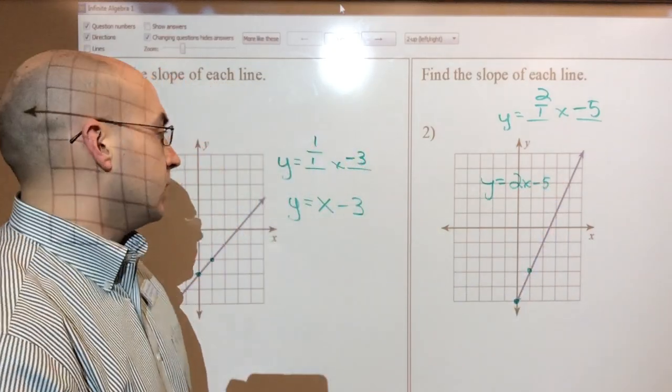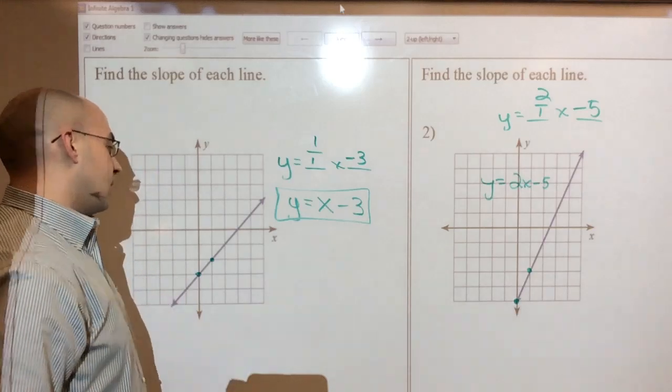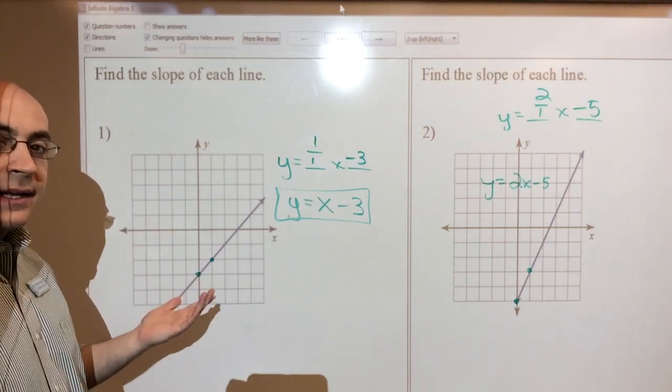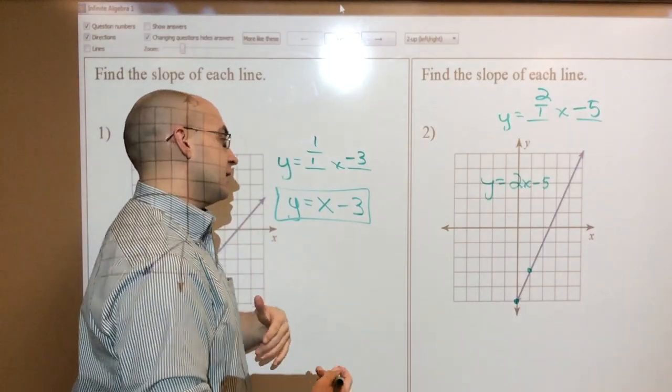So this is going to be y equals 2x minus 5. Let's add on to this for a second. Let's go back to this line. So this was the equation of this line. Now, we can see a graph, so it makes it a little bit easier. But pretend like you didn't have a graph.